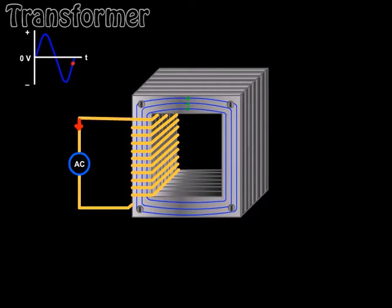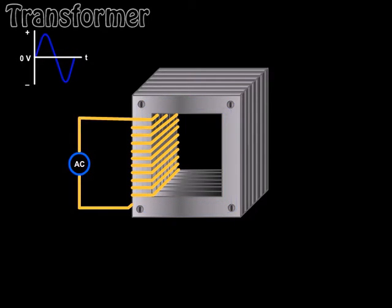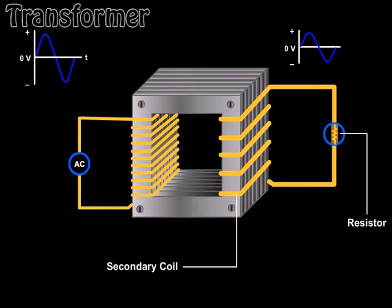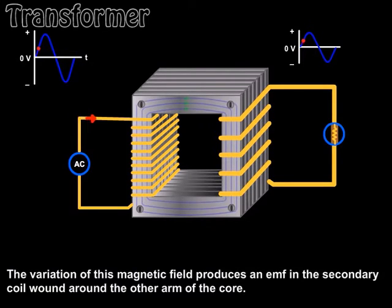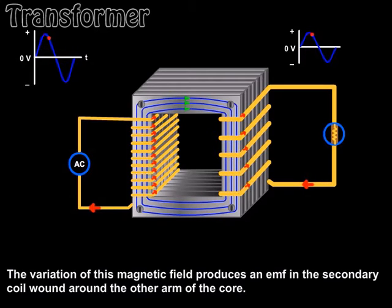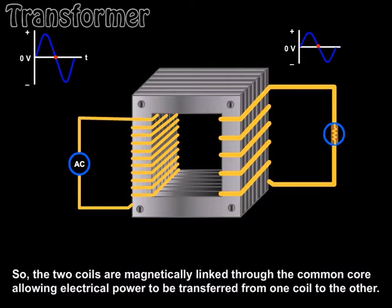The variation of this magnetic field produces an EMF in the secondary coil wound around the other arm of the core. So, the coils are magnetically linked through the common core, allowing electrical power to be transferred from one coil to another.